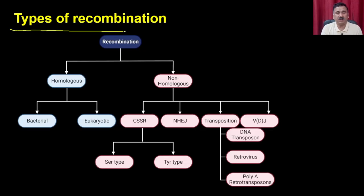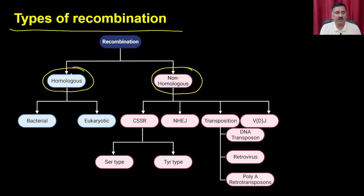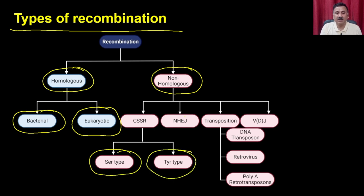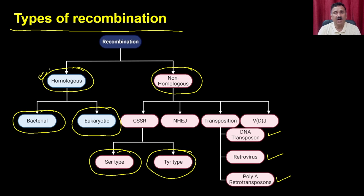Recombination is used in traditional approaches to correct particular types of genetic disorders. Genetic recombination can be homologous recombination or non-homologous recombination. Within homologous recombination, you can have bacterial or eukaryotic recombination. In non-homologous recombination, you have CSSR — with serine or tyrosine subtypes — as well as NHEJ, transpositions, and VDJ recombination. Within transpositions, you have DNA transpositions, retroviruses, and poly-A retroviruses.